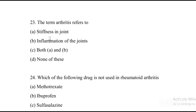Next question: The term arthritis refers to — Option A: stiffness in joint. Option B: inflammation of the joint. Option C: both A and B. Option D: none of these. The answer is Option B, inflammation of the joint. Arthritis means inflammation in joints.